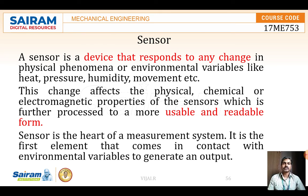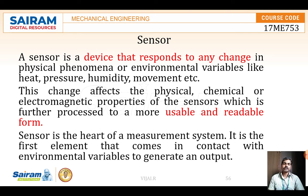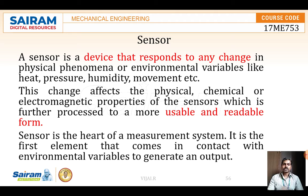A sensor responds to any change — for example, temperature and pressure are changing continuously in a system. If I want to monitor pressure and temperature, I can use a sensor. The sensor responds to any changes and converts them into a readable form. The change affects the physical and chemical property of the sensor, so it gives a readable output.